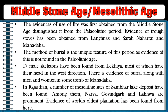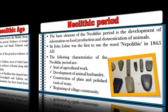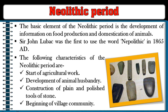Evidence of trough stoves has been obtained from Langhnaj, Sarai Nahar Rai, and Mahadaha. The method of burial is a unique feature of this period, as no evidence of it is found in the Paleolithic Age. Seventeen male skeletons have been found, most with their heads in the west direction. Evidence of joint burial of men and women is found in some tombs of Mahadaha. Evidence of the world's oldest plantation has been found from Sambhar Lake deposits including Narwa, Govindgarh, and Lakwa.